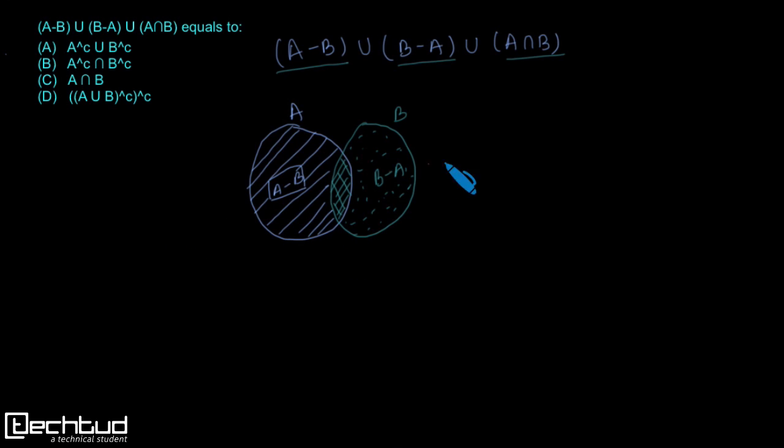Let us label it. This part is A minus B, this part is B minus A. And this part is A intersection B, fine?